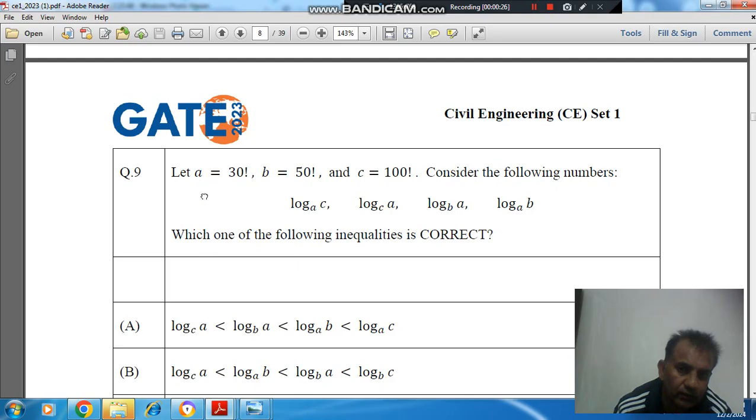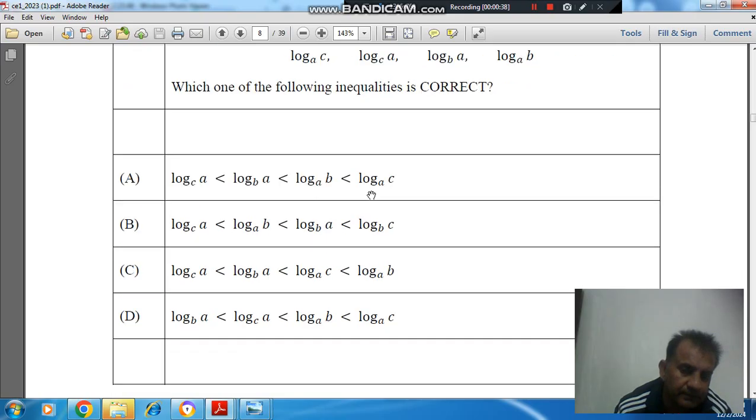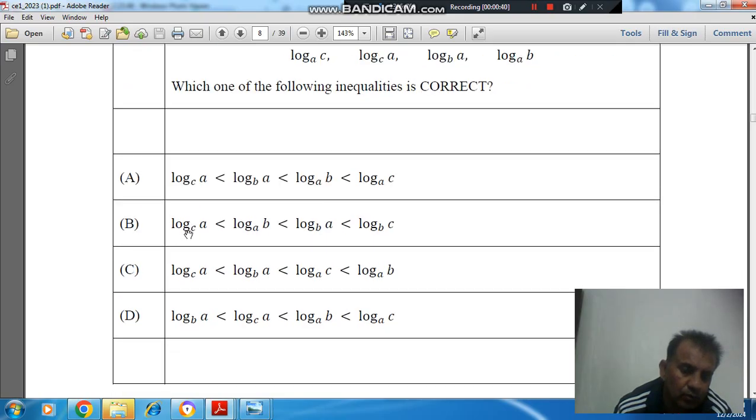Which one of the following inequalities is correct? Option A: log base C of A < log base B of A < log base A of B < log base A of C. Option B: log base C of A < log base A of B < log base B of A < log base B of C.